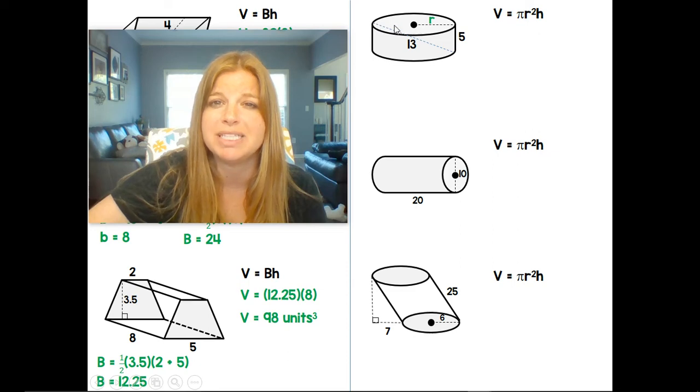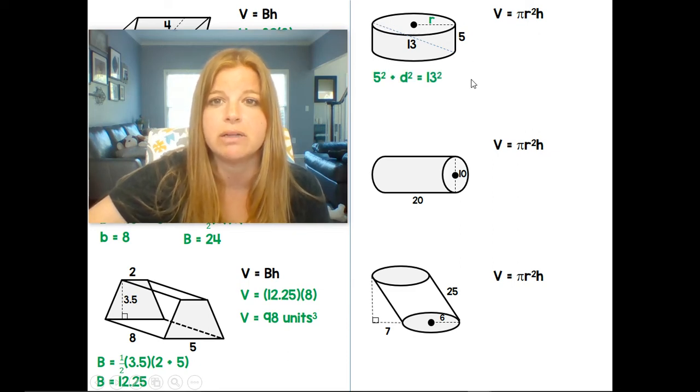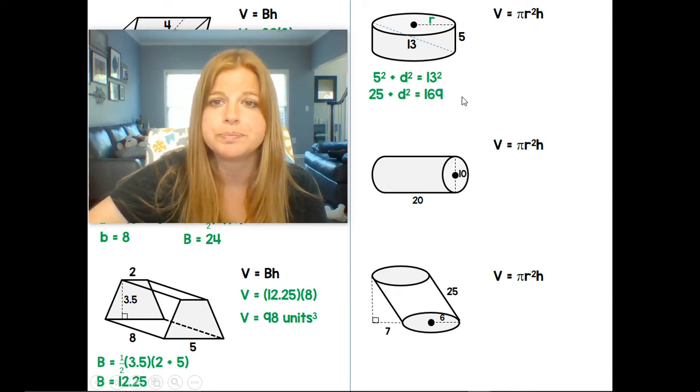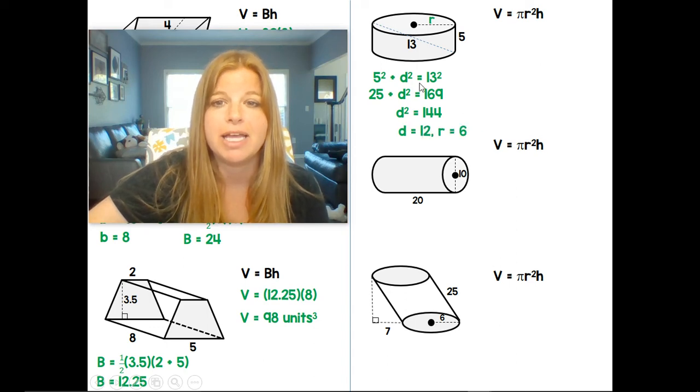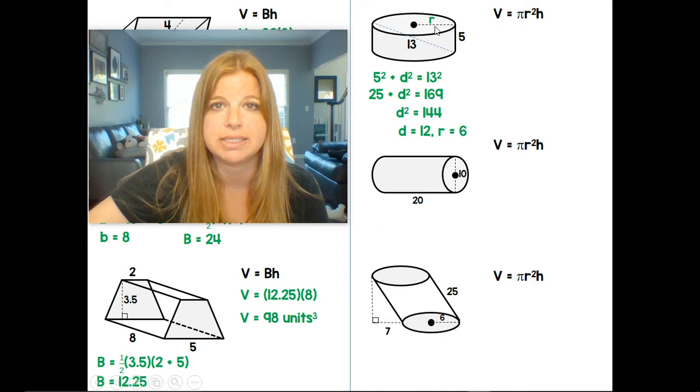So 5 squared plus the diameter squared would be equal to 13 squared. If I end up doing my math for my diameter, I end up getting a diameter of 12, which then means the radius is 6.